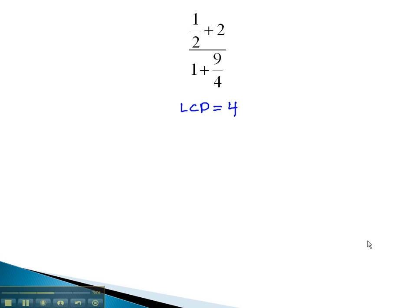So we will multiply each term by 4. This includes the 2, which is not a fraction, and the 1, which is not a fraction. We must multiply each term, whether it's a number or a fraction, by the 4.